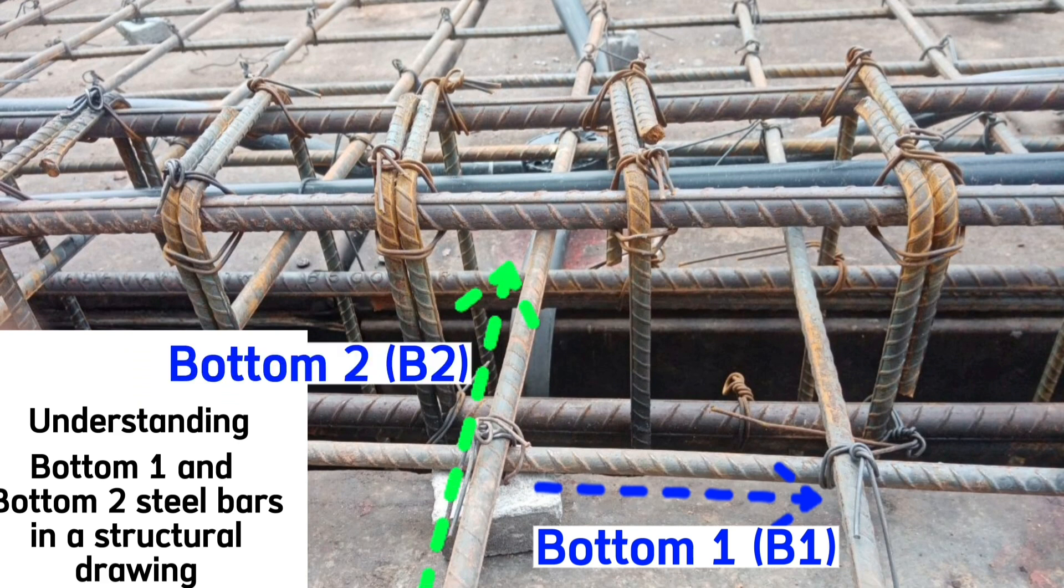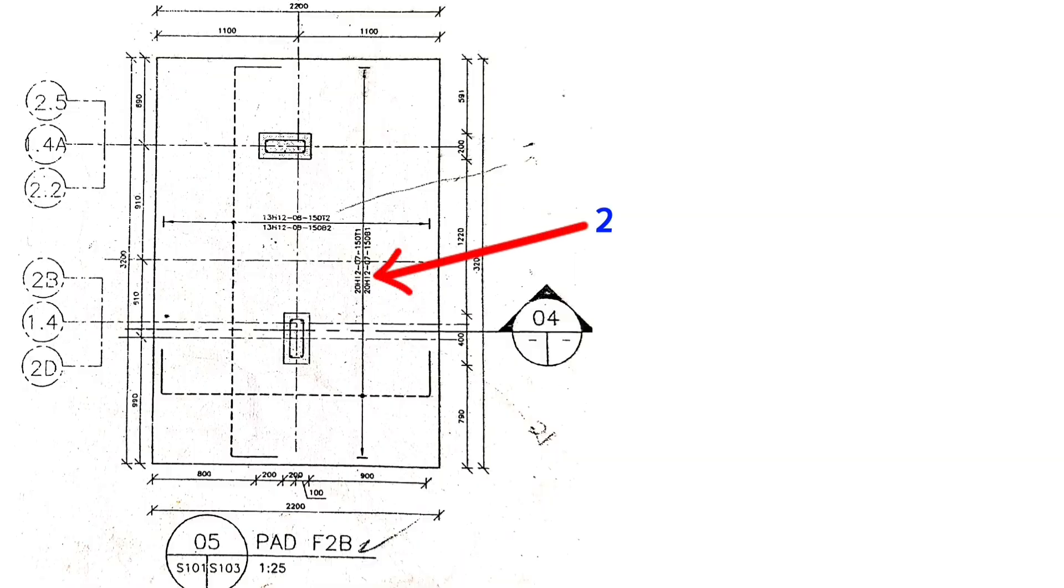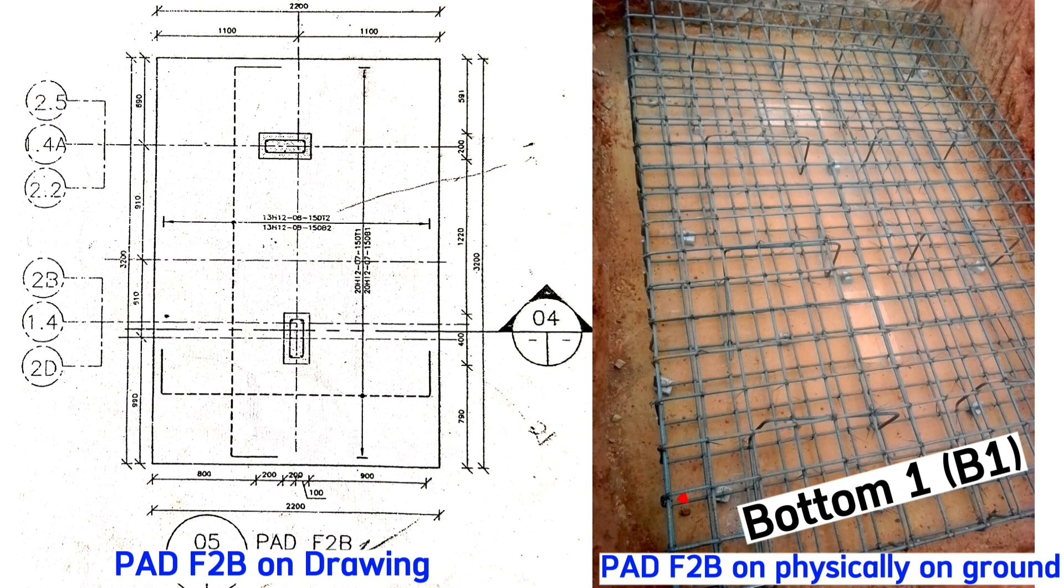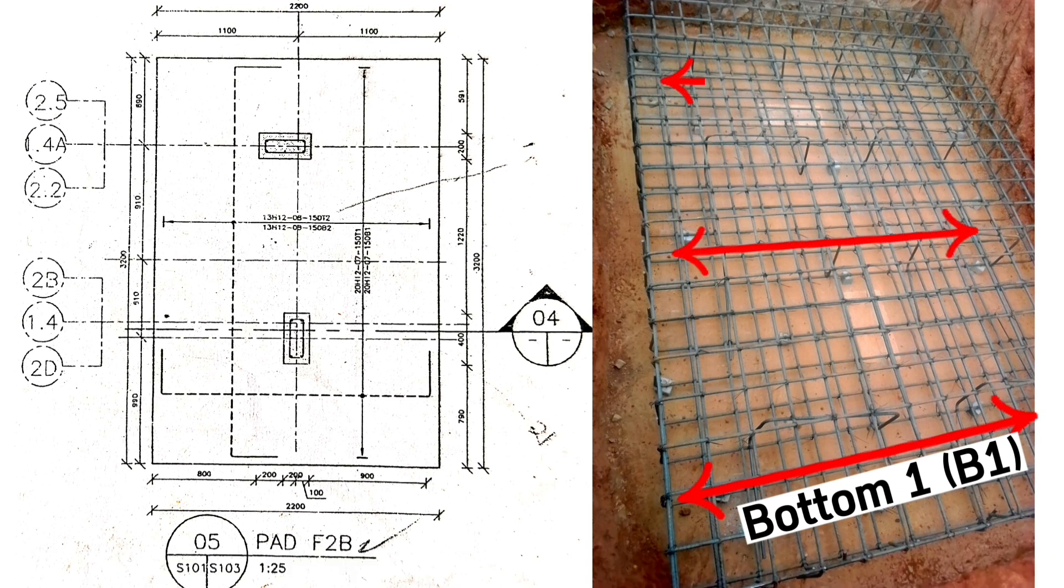As it is in the drawing, 20 H12 with 150 millimeters spacing for bottom one will be sitting on ground. It looks like this. Bottom one steel bars will run along this direction. These bars which run along here are the ones which touch the ground, then on top of them we have bottom two steel bars which will run along this direction.